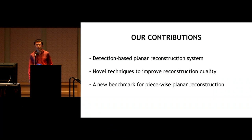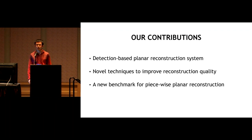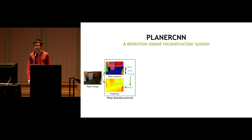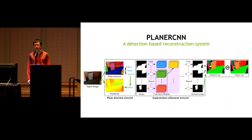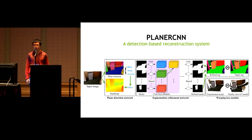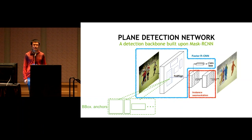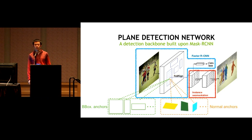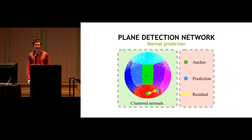We propose the first detection-based planar reconstruction system with novel techniques to improve reconstruction quality and a new benchmark. Our system has three parts: a detection network that extracts an arbitrary number of planar regions, a segmentation refinement network to refine all masks, and a warping loss module to improve reconstruction accuracy. The detection network is based on MaskRCNN, and similarly to bounding box anchors, we use anchors for surface normal regression, clustering all possible surface normals into seven clusters.